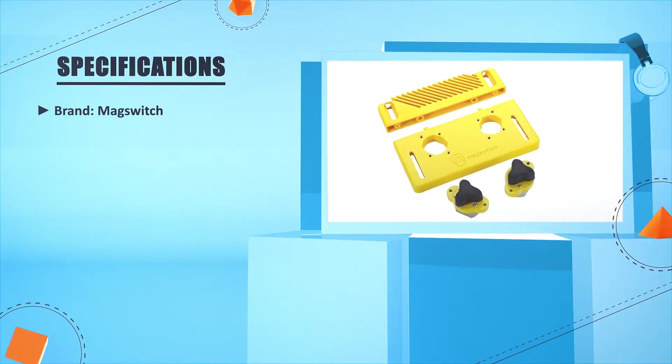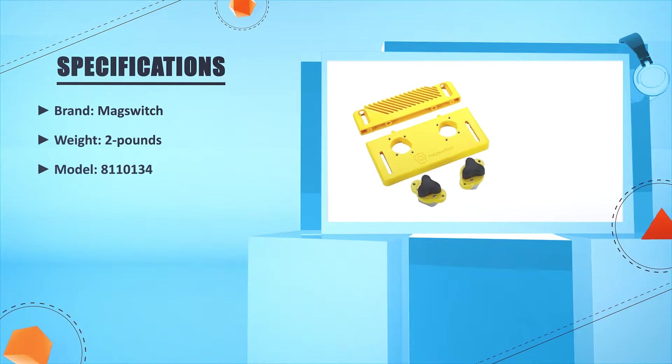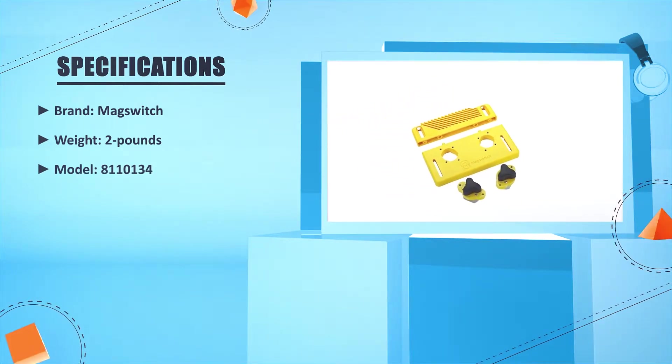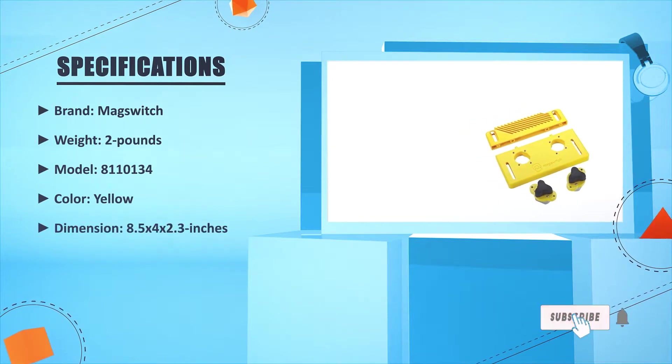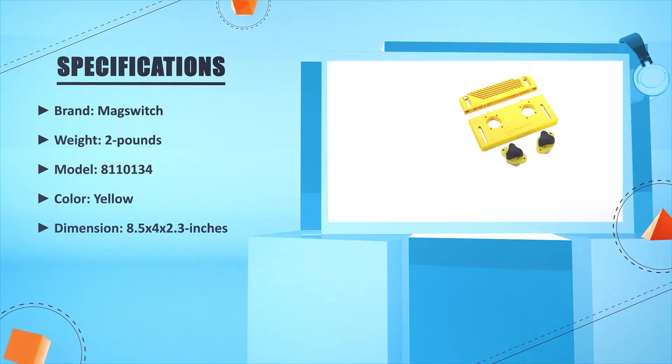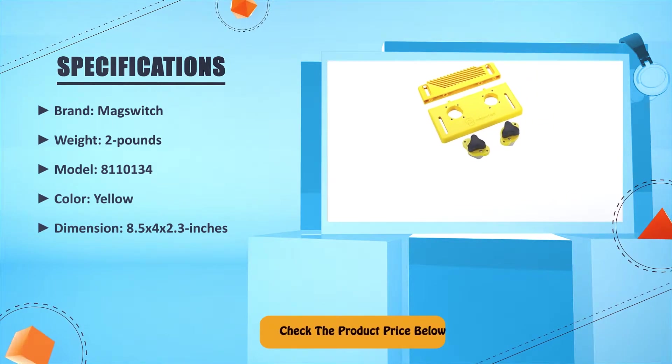Brand: Magswitch. Weight: 2 pounds. Model: 8110134. Color: yellow. Dimension: 8.5 by 2.4 by 2.3 inches. Check the product price below.